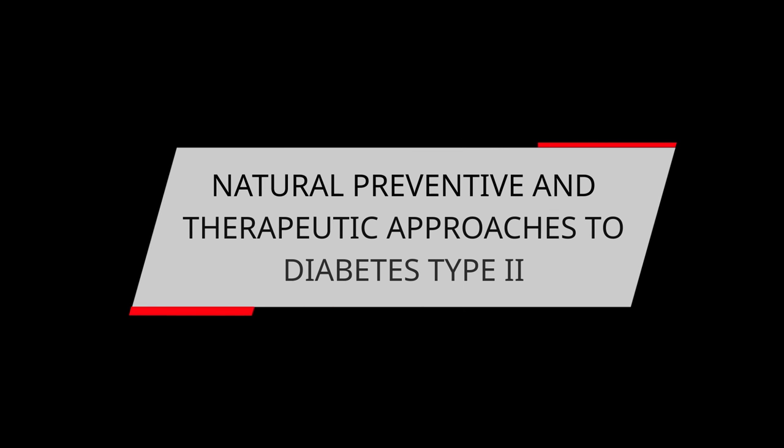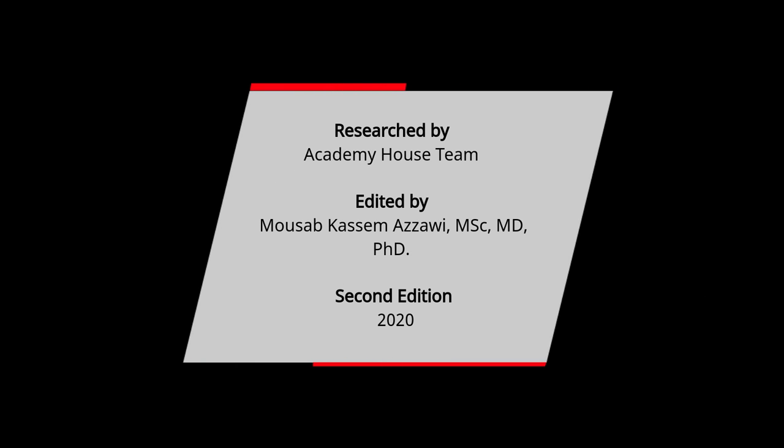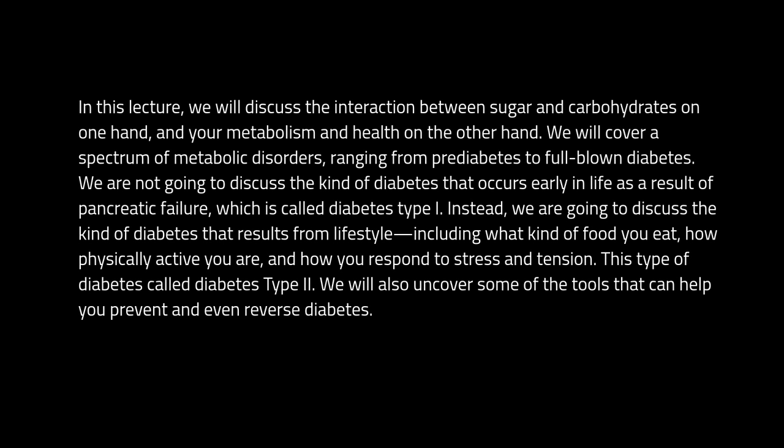In this lecture, we will discuss the interaction between sugar and carbohydrates on one hand, and your metabolism and health on the other hand. We will cover a spectrum of metabolic disorders, ranging from pre-diabetes to full-blown diabetes. We are not going to discuss Diabetes Type 1, which occurs early in life as a result of pancreatic failure. Instead, we are going to discuss Diabetes Type 2, which results from lifestyle, including what kind of food you eat, how physically active you are, and how you respond to stress and tension.